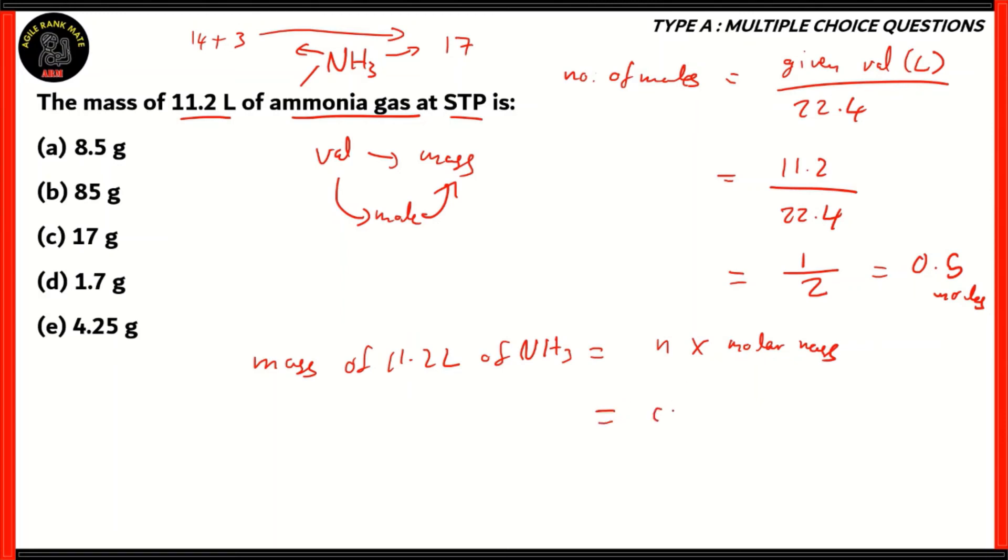Therefore, you will have 0.5, or in this case, let's use 1 by 2, times 17. We have 17 divided by 2, classic division. 2 times 8 gives you 16. You get 1. If you add a decimal point, you can add 0s. You now have 10. 5 times 2 gives you 10. Therefore, you have a remainder of 0 and a quotient equal to 8.5. So 8.5 grams is the mass of 11.2 liters of NH3. Therefore, the correct option in this case is option A, 8.5 grams.